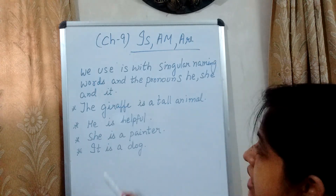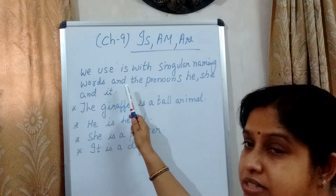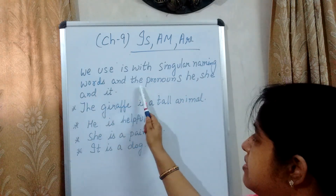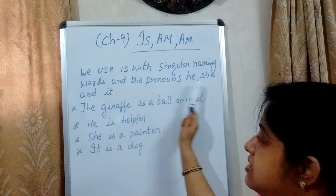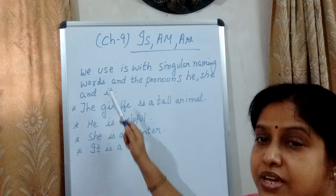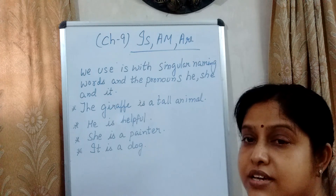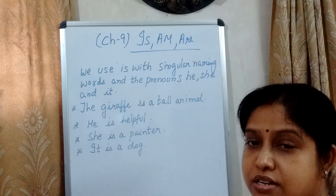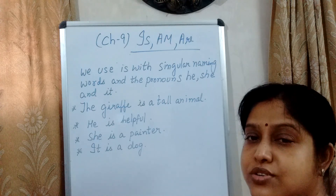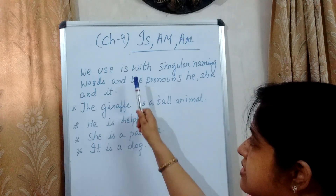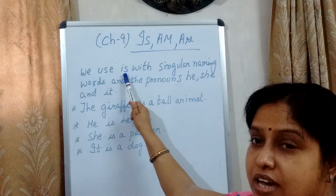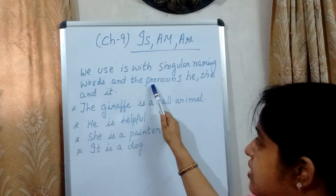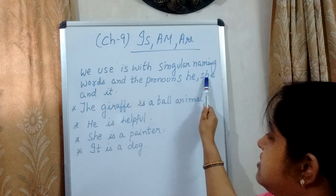So we use is with singular naming words and the pronouns he, she and it. Is ka use hama loog kahan kaartate hai? Singular naming word — singular yaani one. To naming word jo singular hota hai, us ke saath hama loog is ka use kaartate hai. Or kis ke saath kaartate hai? Pronoun jaise ki he, she and it.